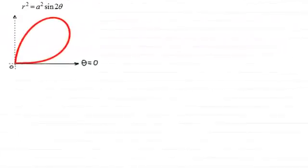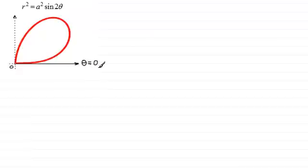Hi there. In this video I want to show you how we find tangents to a polar curve which are perpendicular to the initial line theta equals zero. The method I'm going to show you is true for all polar curves, but we'll just look at this one here.